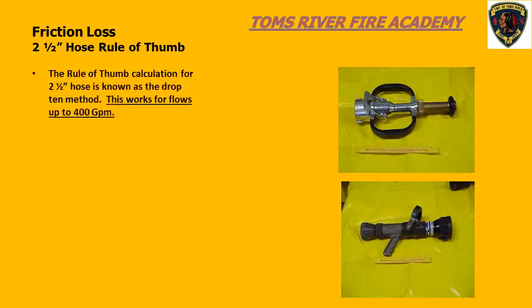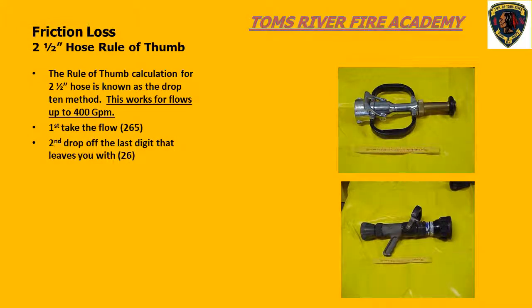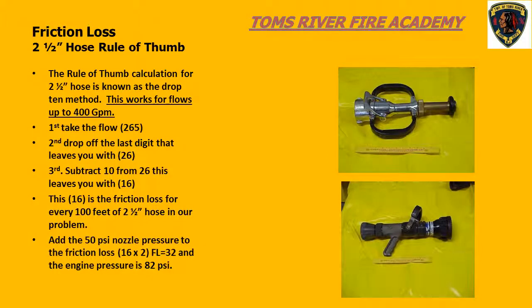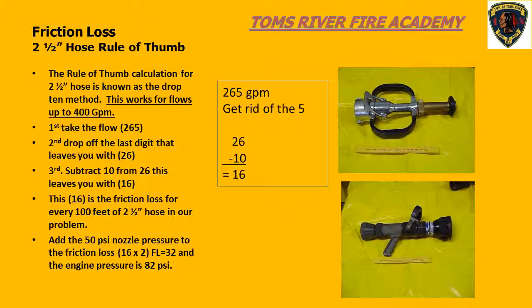The rule of thumb calculation for 2.5-inch hose is called the drop 10 method. First, we take the flow — 265 gallons per minute — and remove the last digit. In this case, we get rid of the 5, which leaves us with 26. Second, we take the 26 and subtract 10 from it — this is where we get the drop 10 name from. Once we subtract 10 from 26, we are left with 16. This 16 is the friction loss for each 100-foot section of our 2.5-inch hose.